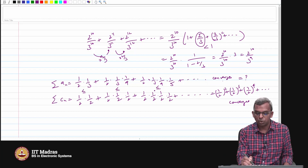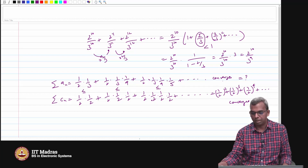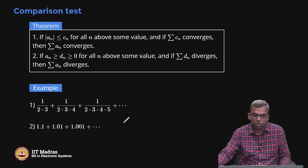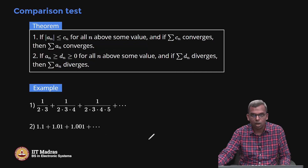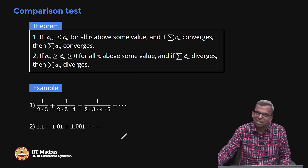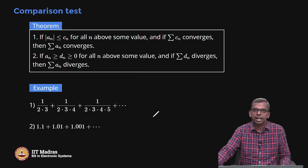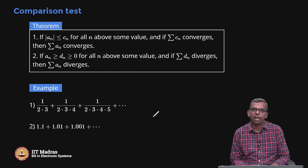Notice how the comparison test lets you build on a simple known result to establish something new. Another example: 1.1 + 1.01 + 1.001 + 1.0001 + ... The series 1 + 1 + 1 + 1 + ... is geometric with ratio 1 and it diverges, and our series is above it term by term. So this series also diverges. This idea of the comparison test is a powerful, powerful idea we will use in later lectures to decide convergence of more interesting series.